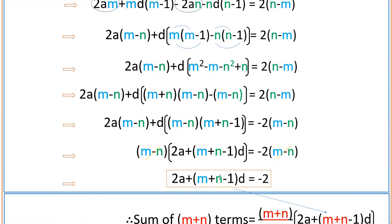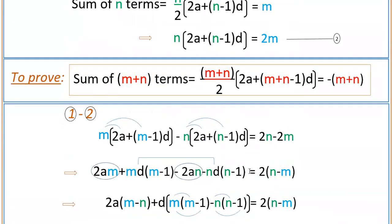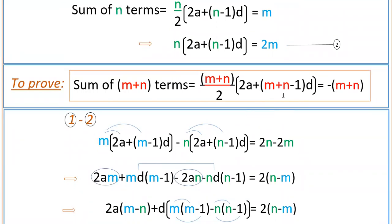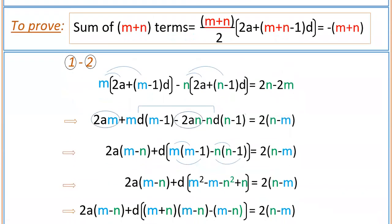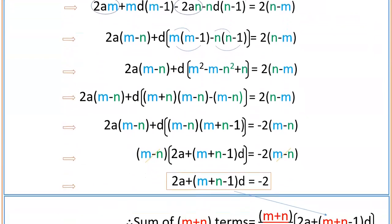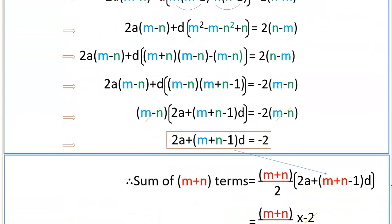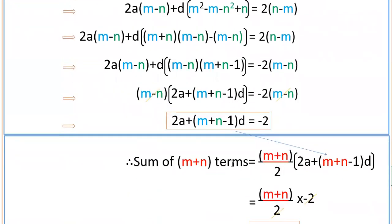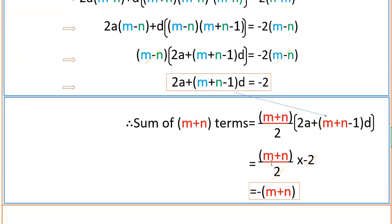So we have obtained 2a plus m plus n minus 1 into d equals minus 2. Now substituting this value into the formula for sum of m plus n terms — which is m plus n by 2 into 2a plus m plus n minus 1 into d — substituting minus 2 here, the 2 cancels and we get minus of m plus n. Hence, sum of m plus n terms is equal to minus of m plus n.